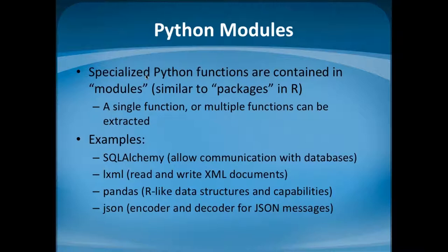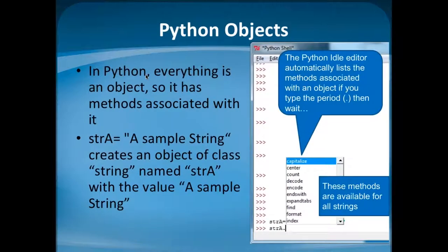Python has lots of specialized modules, similar to R packages. Examples include modules for talking to databases — useful for extracting or inserting data — and XML processing. Just last night I parsed through about 6,000 metadata documents in XML; it took about half a page of Python code. There's also Pandas and NumPy, which have R-like data structures including something comparable to a data frame. And there are JSON modules for communicating data rapidly over the web. Many other software packages, like ArcGIS's ArcPy, have Python interfaces.